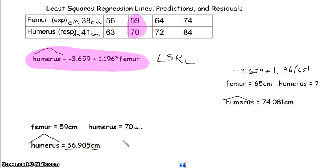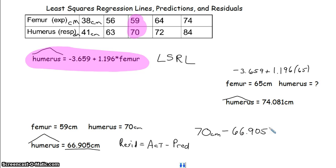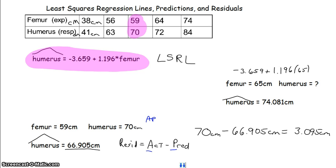When we look at a residual, we're looking at the difference between our actual value and our predicted value. Our actual value is what we physically measured — 70 centimeters. So we calculate 70 minus 66.905, which gives us 3.095 centimeters. A common mistake is switching these two. One way to remember: it goes alphabetical — actual first, minus predicted. For those in AP Statistics, think 'AP': actual minus predicted.